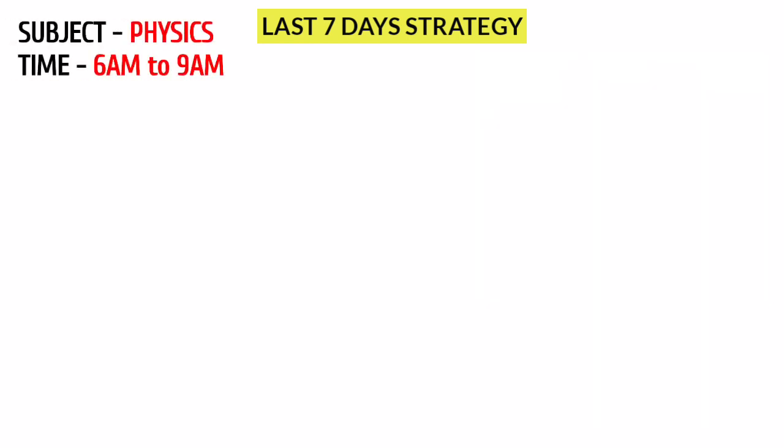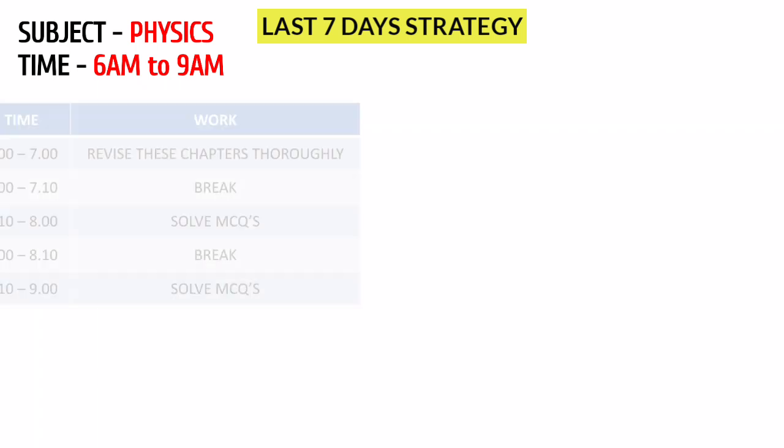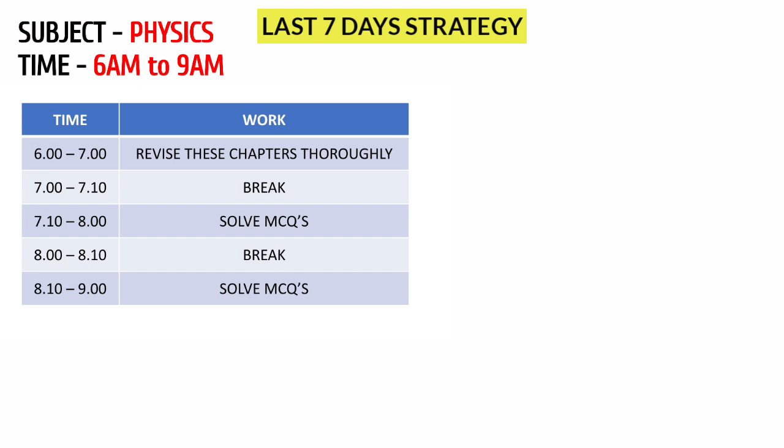From 6 to 9 — 3 hours for physics. The first 1 hour, from 6 to 7, you revise the selected chapters: important formulas, concepts, and all the chapters. Once you have completed revision, the next 2 hours from 7 to 9 you will solve MCQs.